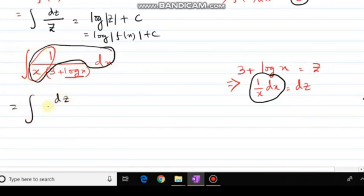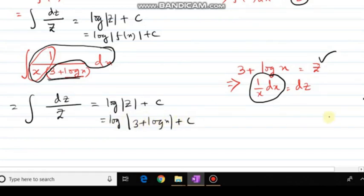So that will be my dz. And what is this? 3 plus log x. From here, z. Integration of dz by z. So it will be log of mod z plus c. So answer will be log of 3 plus log x plus c.